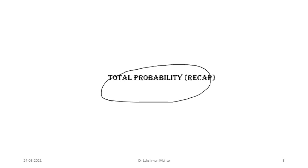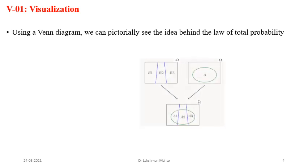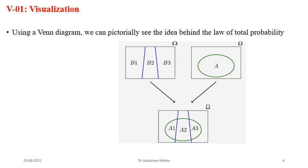Now coming to a recap of total probability. First I will give the visualization of total probability through a Venn diagram, which I had already derived in the last class. Using a Venn diagram we can pictorially see the idea behind the law of total probability. Suppose we have a sample space omega, and in this sample space we introduce a partition with three members B1, B2, and B3.